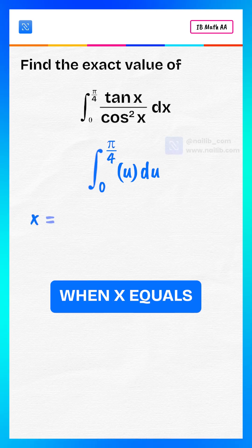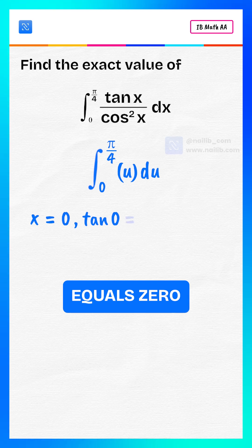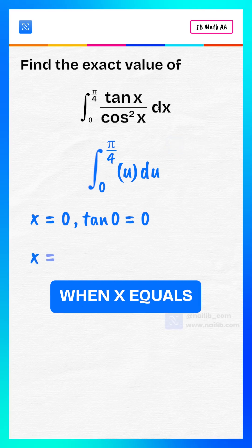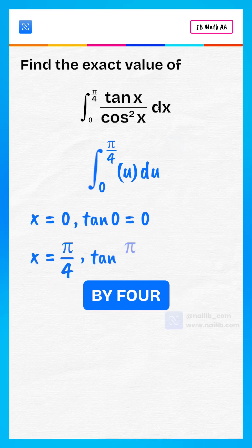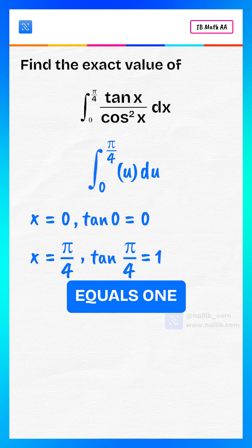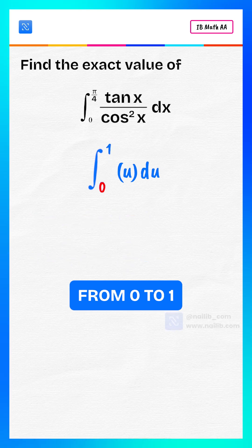When x equals zero, tan of zero equals zero. When x equals pi by four, tan of pi by four equals one. So our new limits are from zero to one.